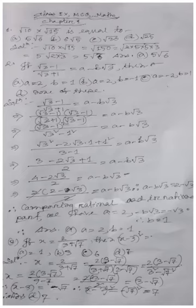Question number 1: what is the value of √10 × √15? The options are: (a) 5√6, (b) 6√5, (c) √30, (d) √25.